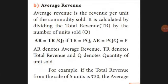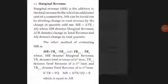Next is average revenue. Average revenue means per unit revenue — how much we earn per unit sold. The formula is: AR equals TR divided by Q, where TR is total revenue and Q is quantity. For example, if I am selling five books and the total revenue is thirty rupees, then AR equals thirty divided by five, which equals six rupees per unit.